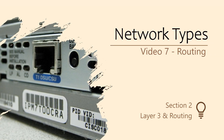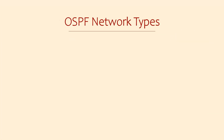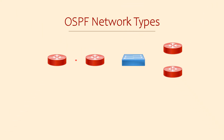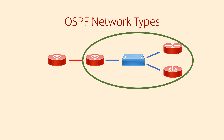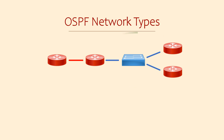Let's think about OSPF neighbors again. As we've seen, there is a network between neighbors. This could be a very small network, only enough to connect two routers together and nothing more, or it could be a bigger network with several routers connecting to a switch, and there might even be other devices on the same switch. From OSPF's perspective, that's only two of the possible network types. In total, there are four network types.